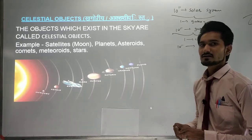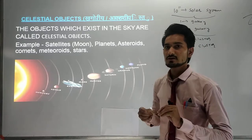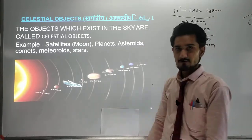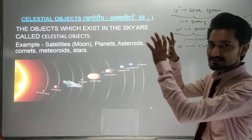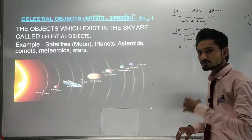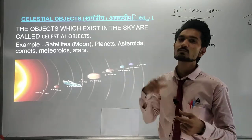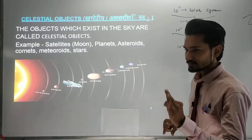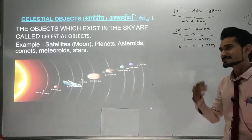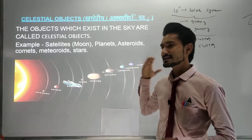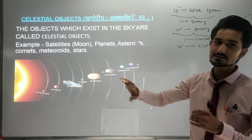Without doing the study of this universe, we cannot say we know everything, because the universe has a lot of things we don't know. If you want to be a researcher, you need to study about this universe. Now, regarding celestial objects — whatever objects are present in this space are called celestial objects. The objects which exist in the sky are called celestial objects. Examples include satellites.